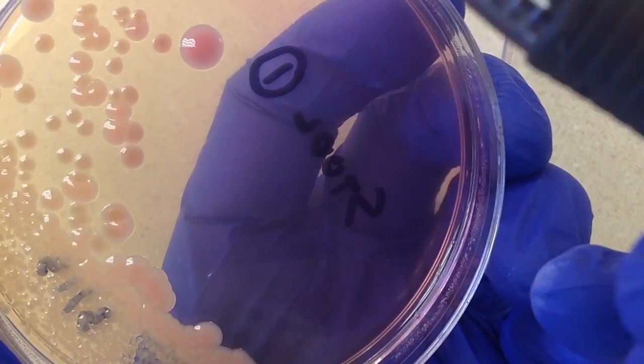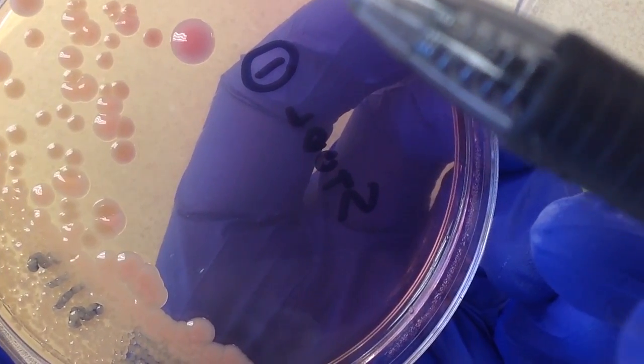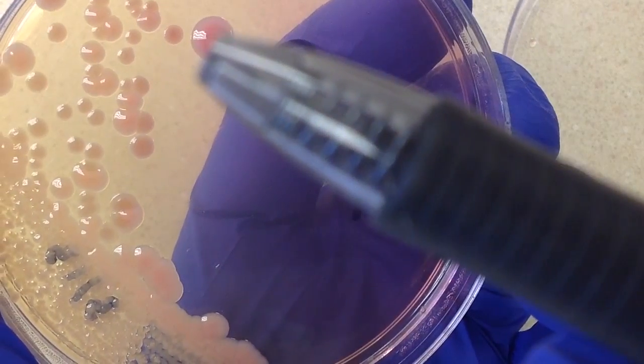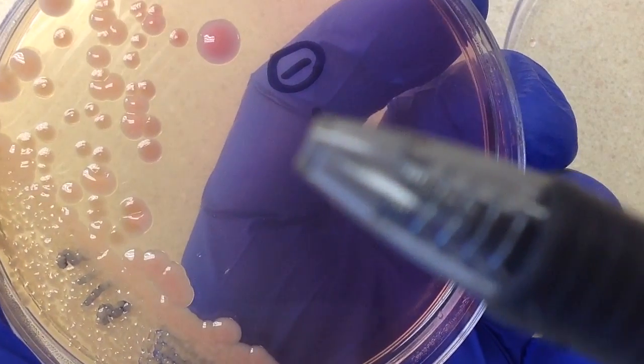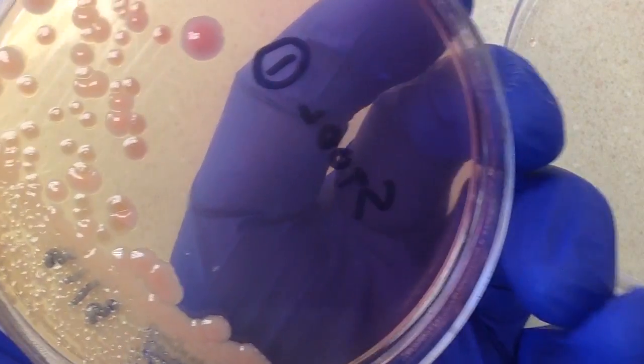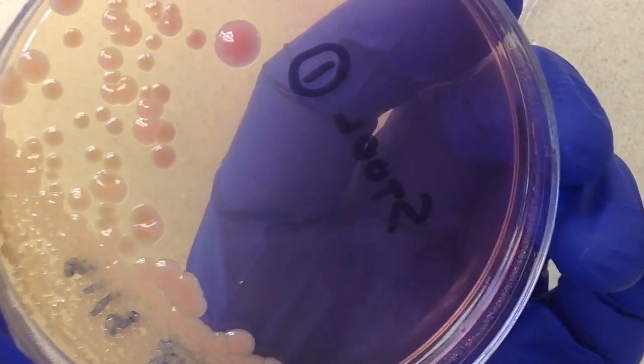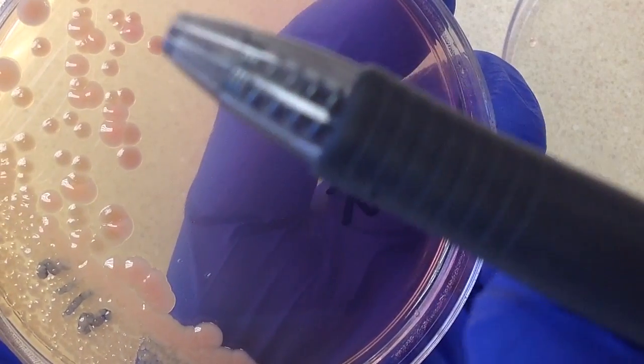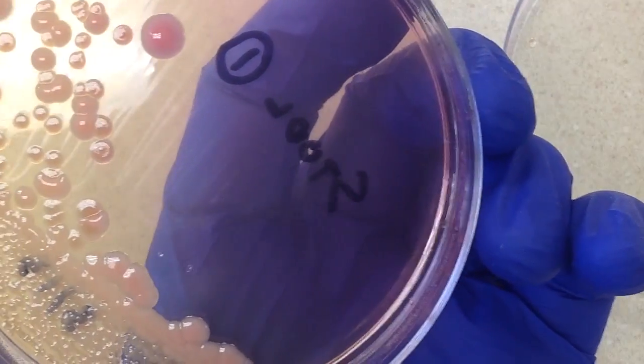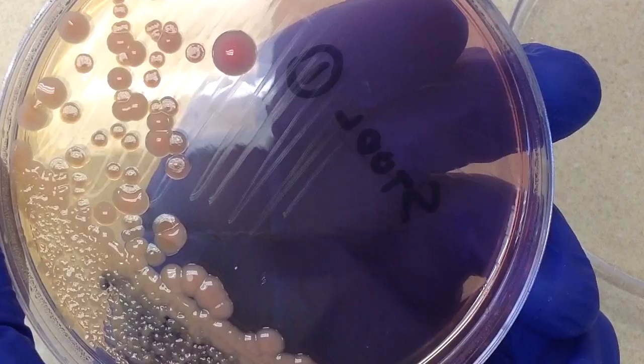These ones are clearly pink, and I feel very comfortable calling those lactose positive. Behind here we have some different looking colonies. Generally on plates like McConkey's, the longer they're on the plate, if they were pink, they start to revert back to being lighter in color. But for me, these ones back here are pink as well.